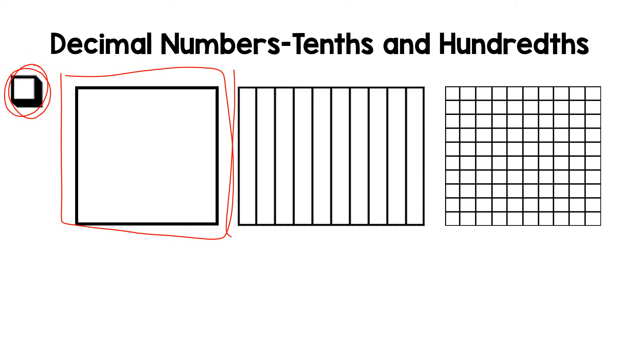Now here is one whole square, but this one is actually split up into ten equal pieces, and we represent that as tenths. That's why we talk about the tenths place, and it is also represented in fractions with a denominator of ten.